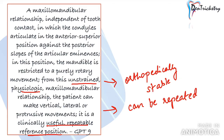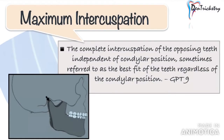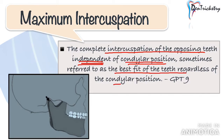Coming to maximum intercuspation — it is defined as the complete intercuspation of the opposing teeth independent of condylar position, sometimes referred to as the best fit of the teeth regardless of condylar position. In simple terms, maximum intercuspation or MIP is the way your teeth occlude or meet when you bite. Remember, this does not have anything to do with centric relation. It doesn't matter if the condyle is or is not in centric relation. It is the position of habitual closure.